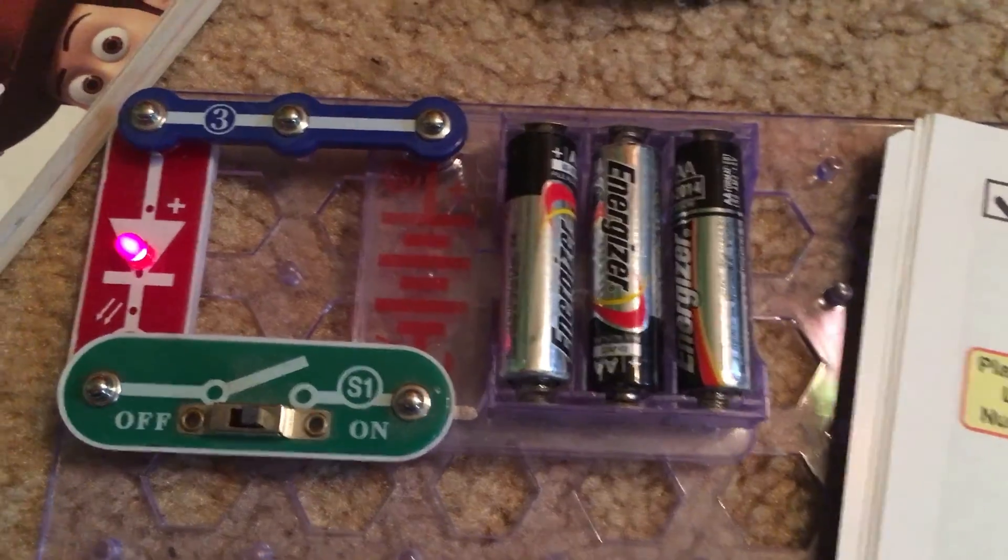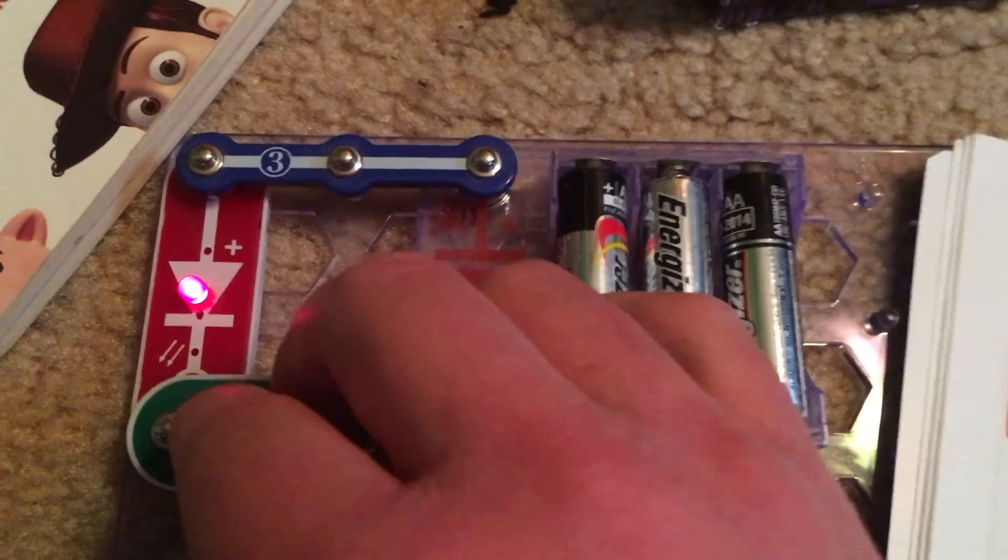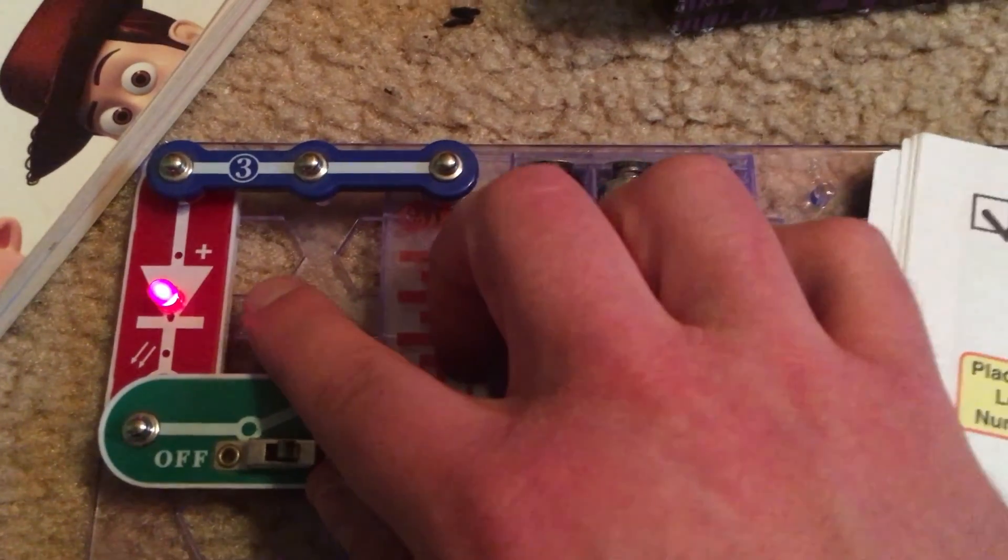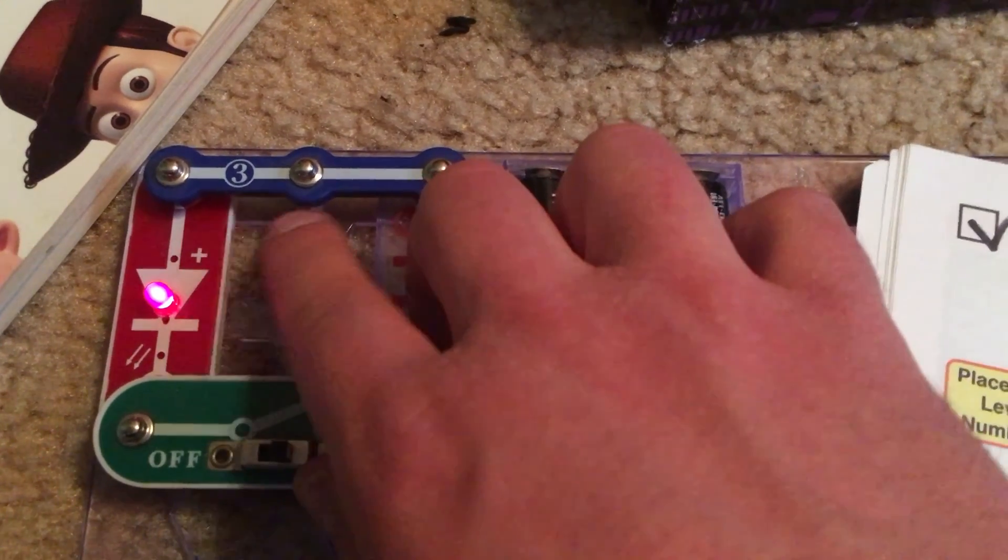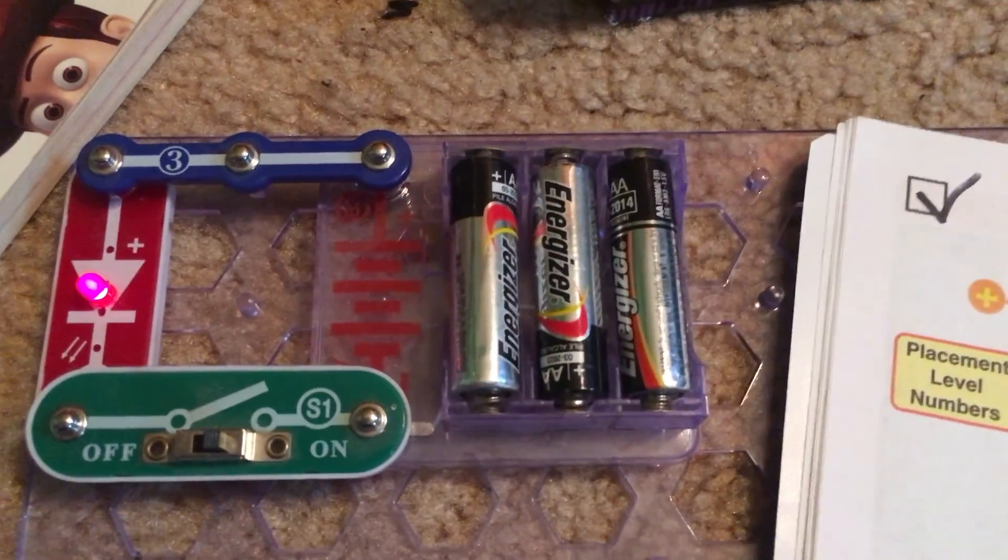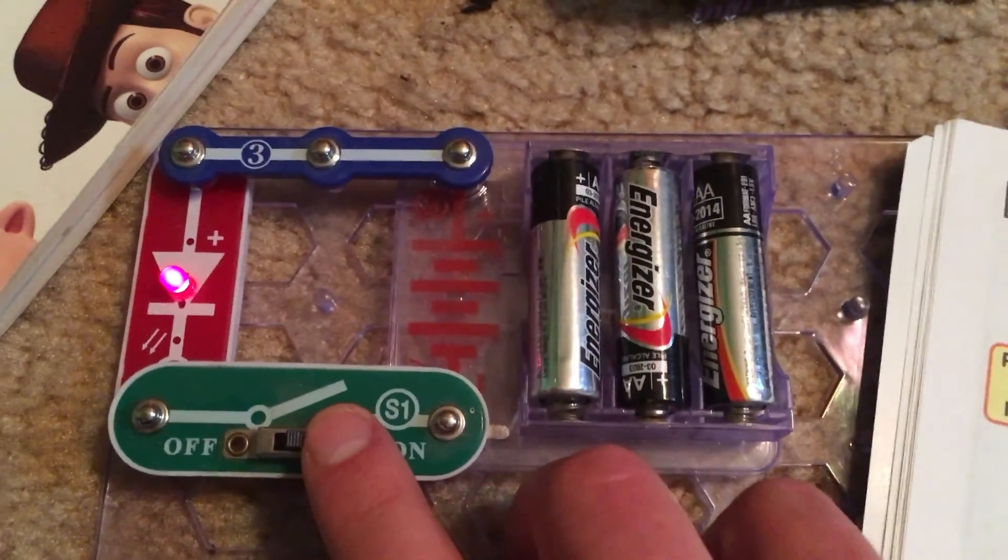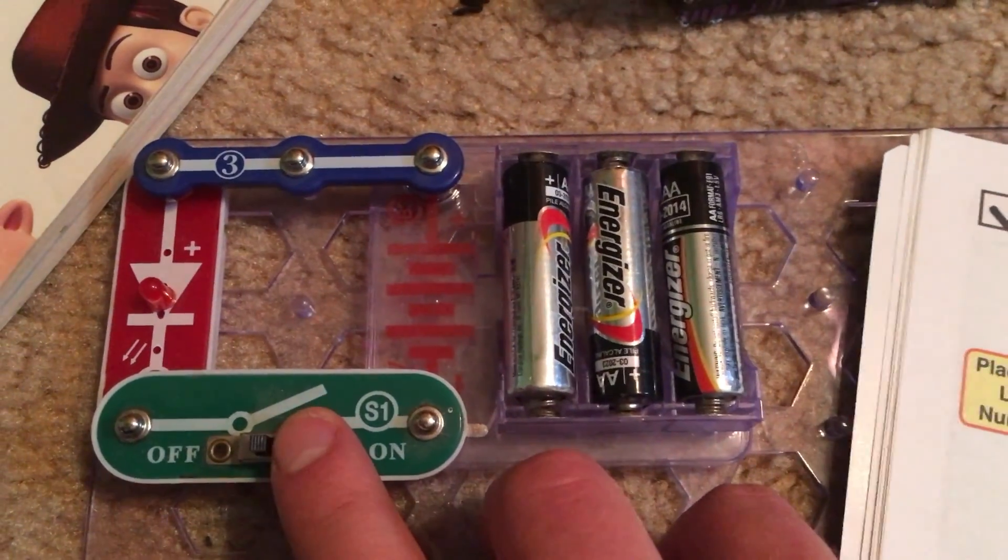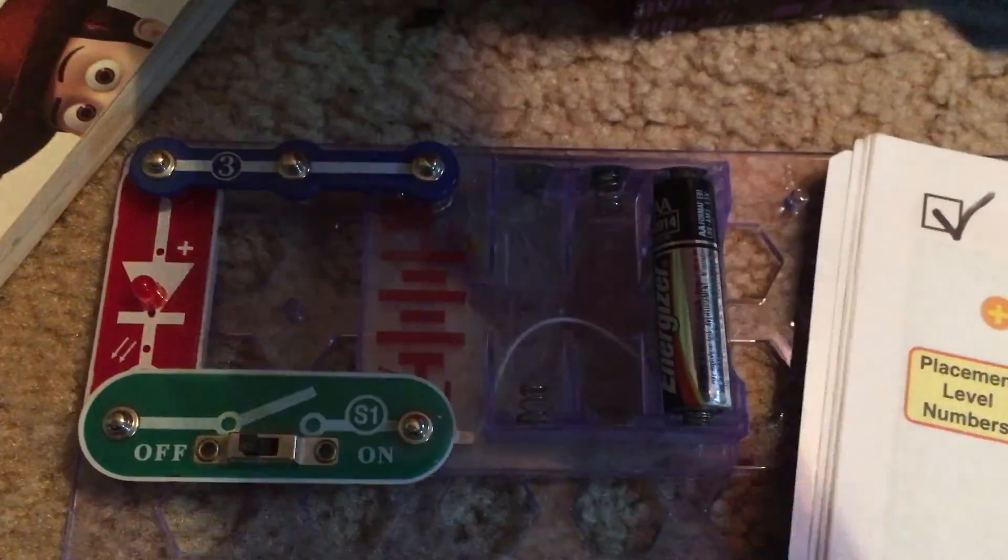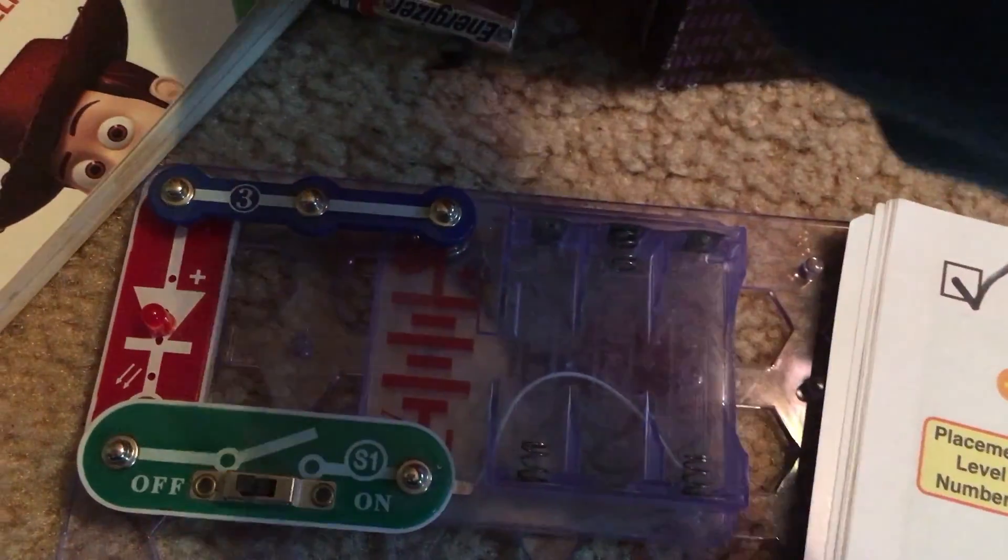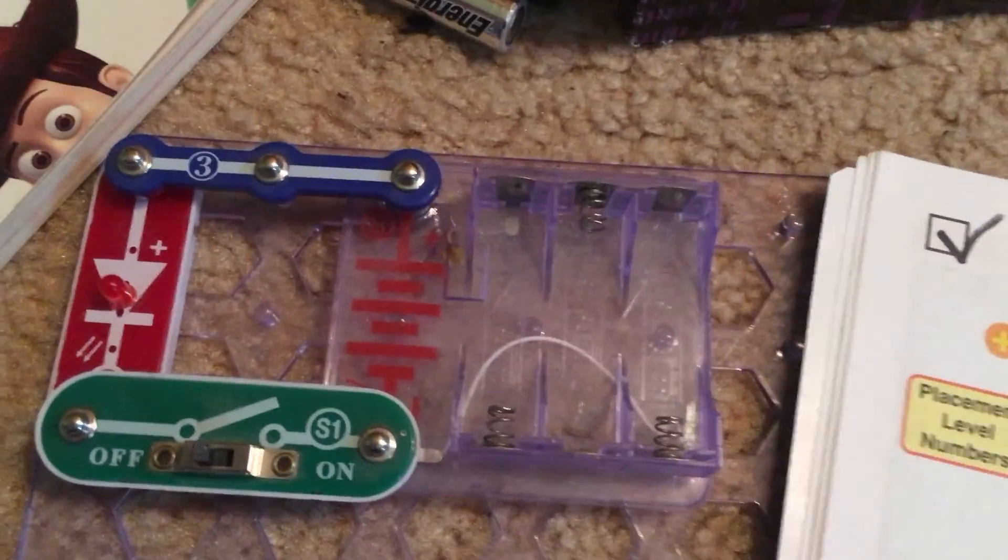Another important and interesting fact about LEDs or light emitting diodes is that they only allow current to flow in one direction. So, if you place this LED, for instance, in the opposite direction, it will not light up. Once you are done with this project, simply turn the switch off. I recommend that you remove the batteries when you are not using the kit because they could still use energy even if the circuit is turned off.